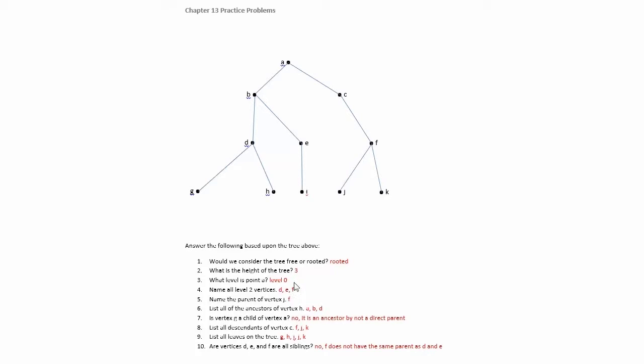If we go to point A and we want to know what the level is, it's at the very top, that's going to be level zero. Then we move down one, two. We want to know all of the vertices that are going to be in level two. That would be D, E, and F.